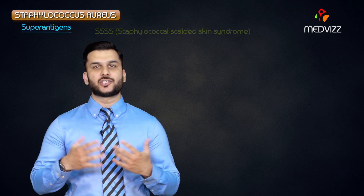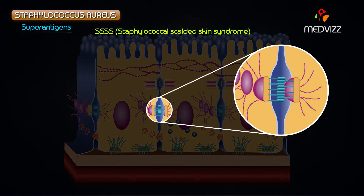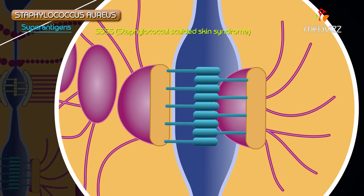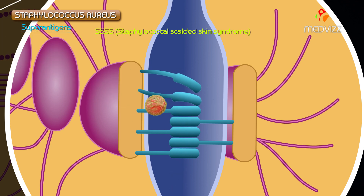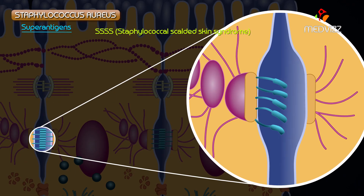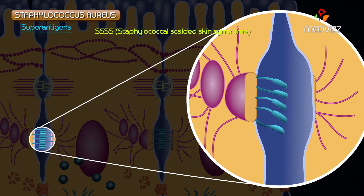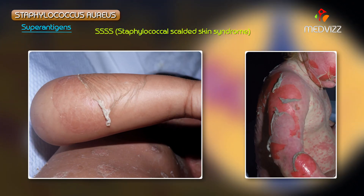In contrast to the superantigen mechanism of TSST-1, the exfoliative toxin that causes scalded skin syndrome actually cleaves desmoglein in the desmosomes. As a result, cells cannot adhere together and the skin peels off — this is called SSSS, or Staphylococcal Scalded Skin Syndrome.